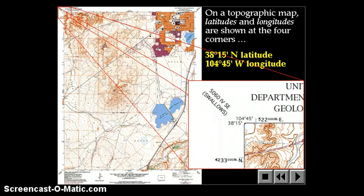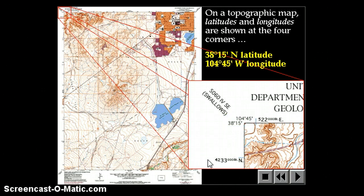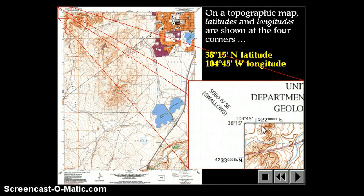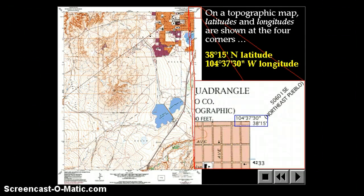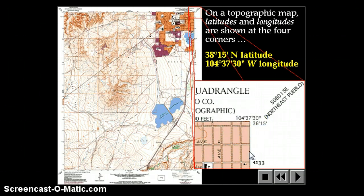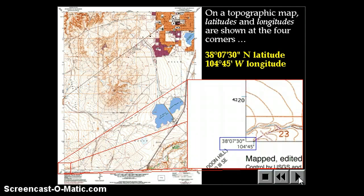On a topographic map, latitudes and longitudes are shown at the four corners. You can always tell it's latitude and longitude because it shows degrees and minutes. Other numbers with M's and E's are UTM coordinates, and red ones are public land survey coordinates. When you want latitude and longitude, look at the corners for the degree and minute symbols. For example, 38 degrees 15 minutes marks the top latitude line, and 104 degrees 37 minutes 30 seconds marks the longitude line along the side. Every corner is marked this way on a USGS topographic map.